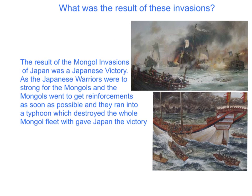What was the result of these invasions? The result of the Mongol invasions of Japan was a Japanese victory, as the Japanese warriors were too strong for the Mongols. The Mongols went to get reinforcements, but ran into a typhoon which destroyed the whole Mongol fleet, which gave Japan the victory.